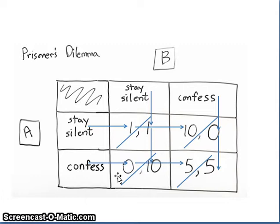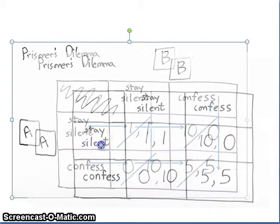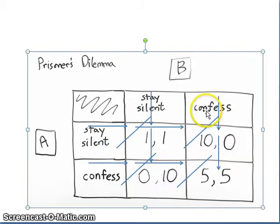The police say, instead of staying silent like the other guy who will get 10 years, if you confess, you're going to walk away. They'll say, we've got all this evidence, we just need somebody to speak up. If prisoner A stays silent and prisoner B confesses, A gets 10 years and B gets nothing. If prisoner A confesses and prisoner B confesses, then they will both end up with five years.